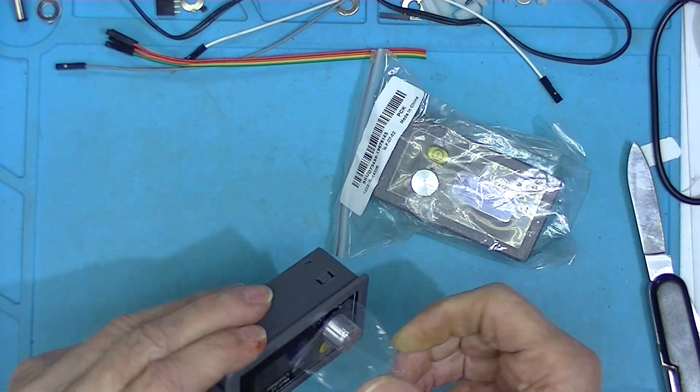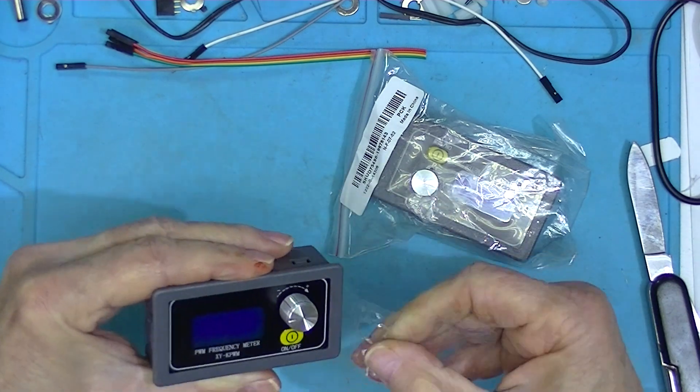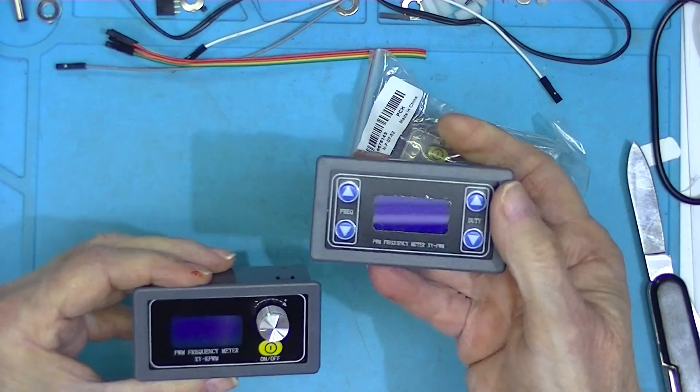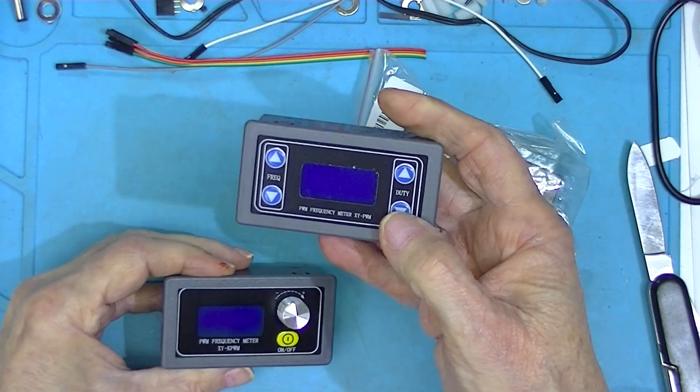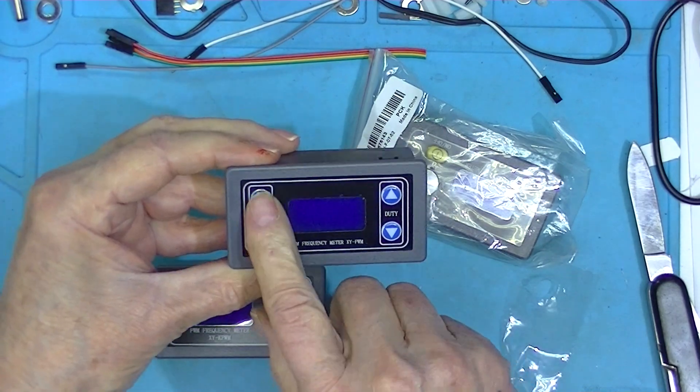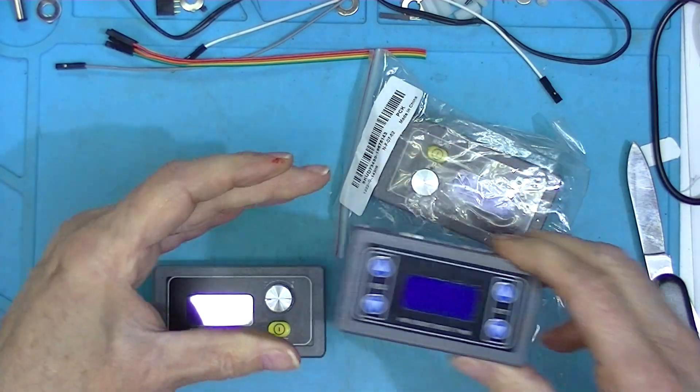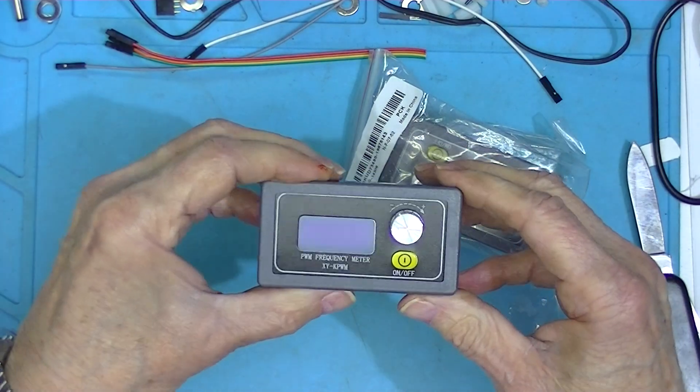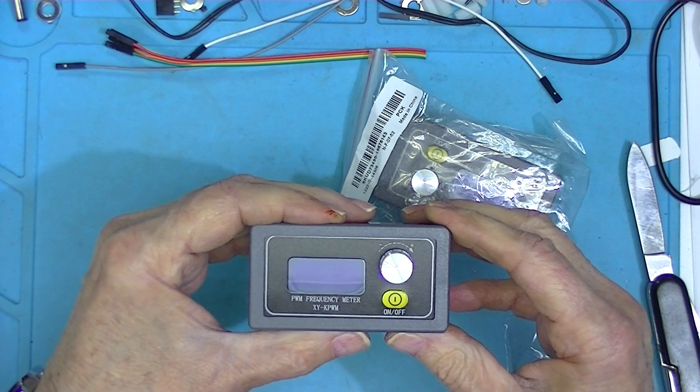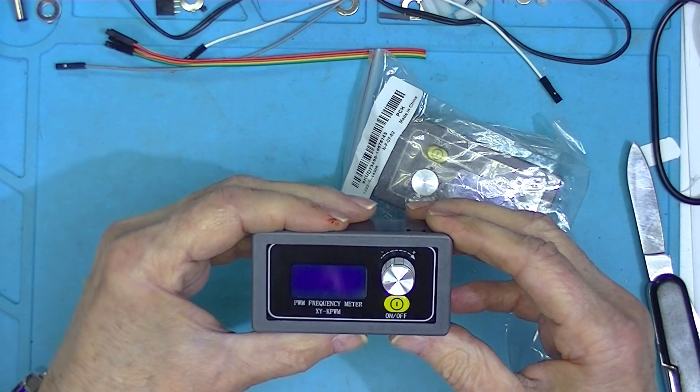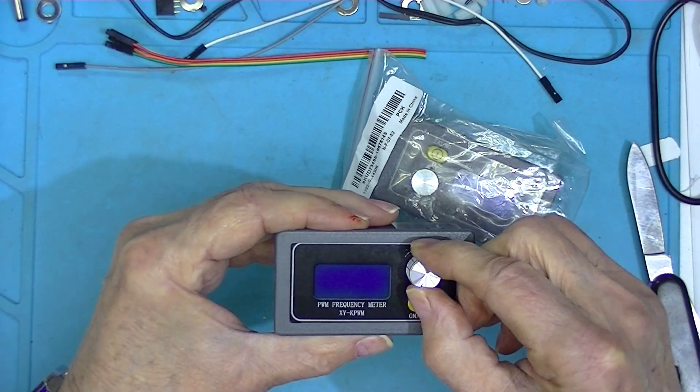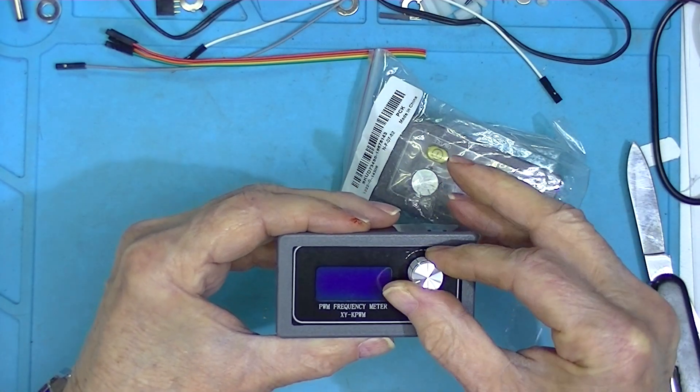They have basically the same specifications as the signal generators I bought from eBay. The eBay signal generator has frequency up-down buttons and duty cycle up-down buttons. The Banggood has the same output specification, 1 hertz to 150 kilohertz, on-off switch, and an encoder switch.